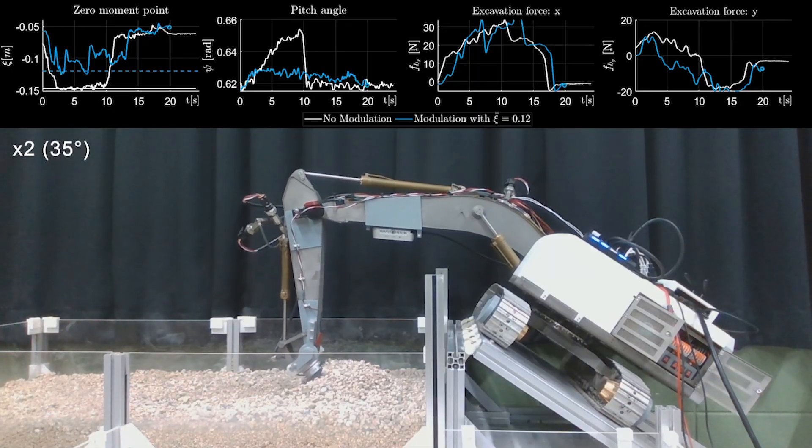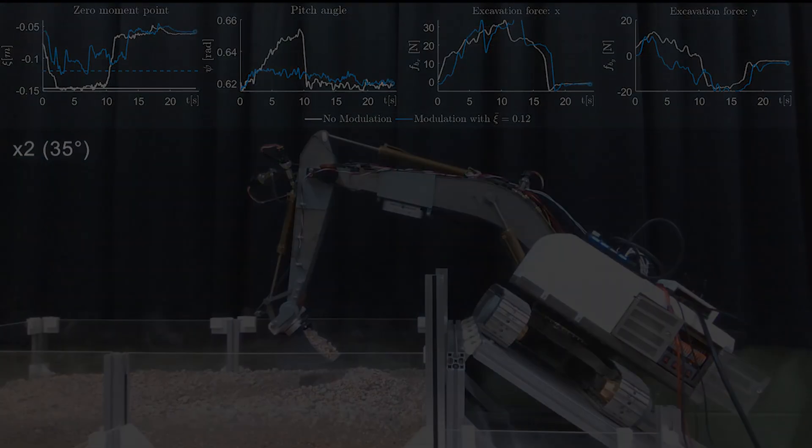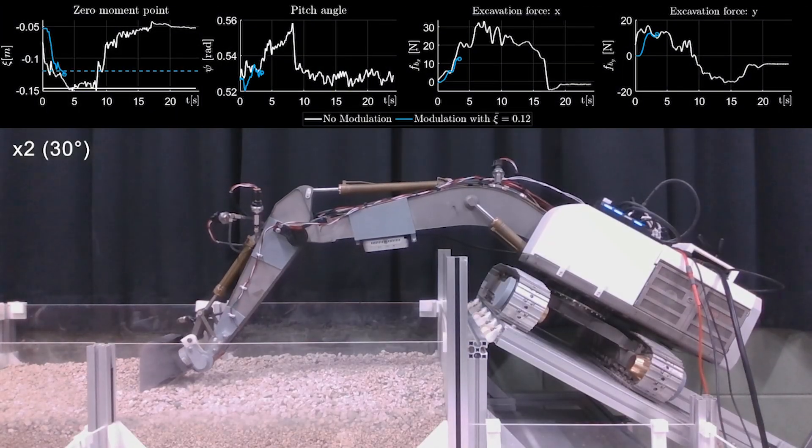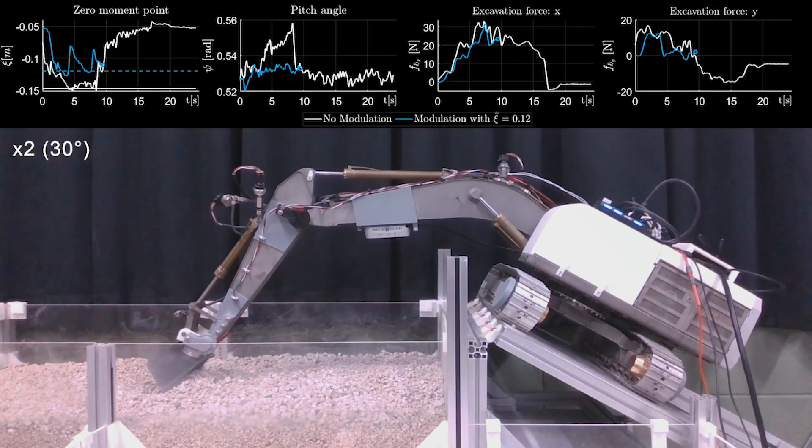The rollover is prevented when located at a 35 degree slope and also a 30 degree slope via our real time trajectory modulation framework.